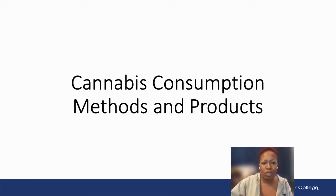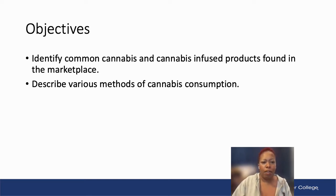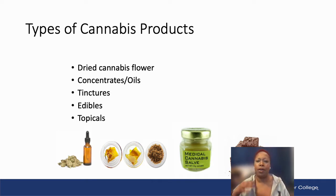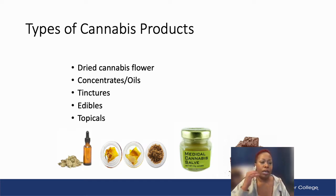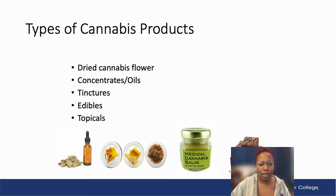Welcome to Cannabis Consumption Methods and Products. Today we're going to identify common cannabis and cannabis-infused products found in the marketplace and describe various methods of cannabis consumption. Types of cannabis products typically include dried cannabis flower or bud, concentrates such as wax, dabs, shatter, butter, or sauce — which are vaporized or used to make oils — as well as tinctures, edibles, and topicals. Edibles include brownies, cakes, candies, and beverages, while topicals are pain salves and things you apply to your skin.